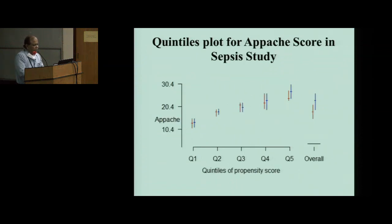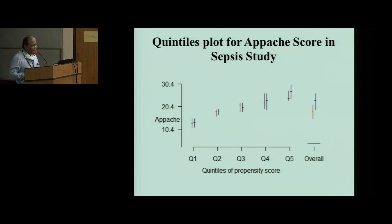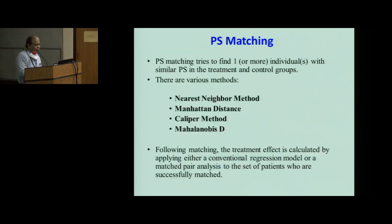Similarly, for the sepsis study, if you look at the severity Apache score there is a big difference between the two groups — sepsis and no-sepsis — but when you look within each stratum they are well balanced, except for the last group with the highest probability (80–100%) where there is a disparity. It looks like the severe sepsis patients had a very high Apache score, creating an imbalance in that highest stratum.